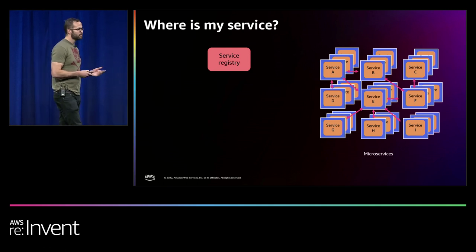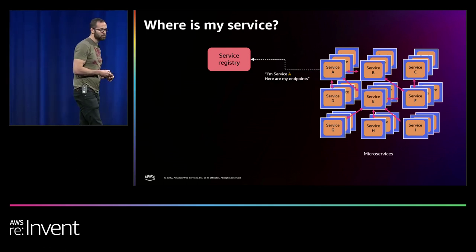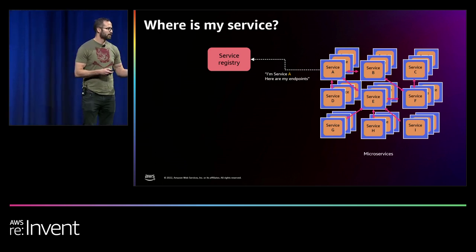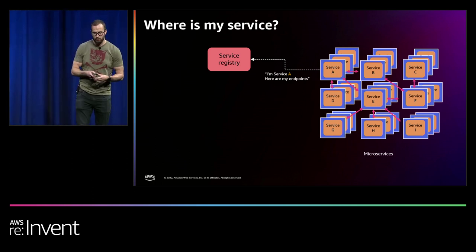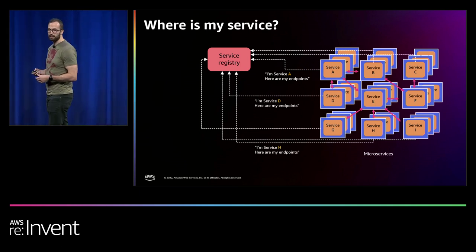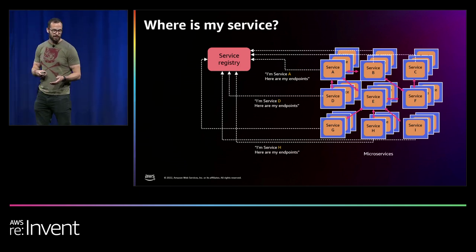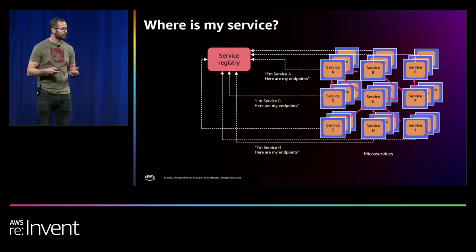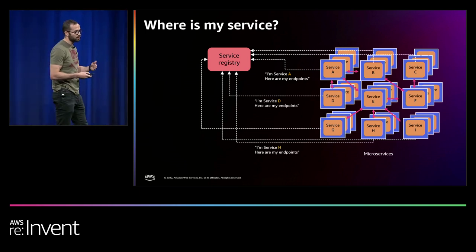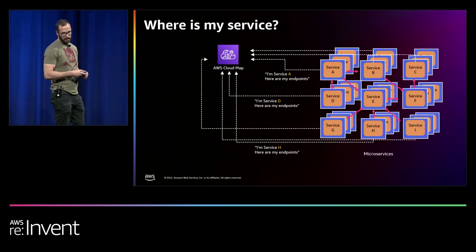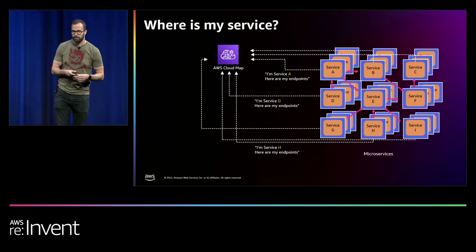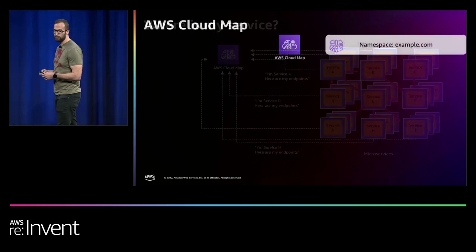We can use a service registry and have each service register with it — saying, here are my attributes, here are my endpoints. Then services can use that registry to discover each other. That's something you'd include in your application — that registration piece. We have a managed service in AWS that takes care of service discovery: AWS Cloud Map.